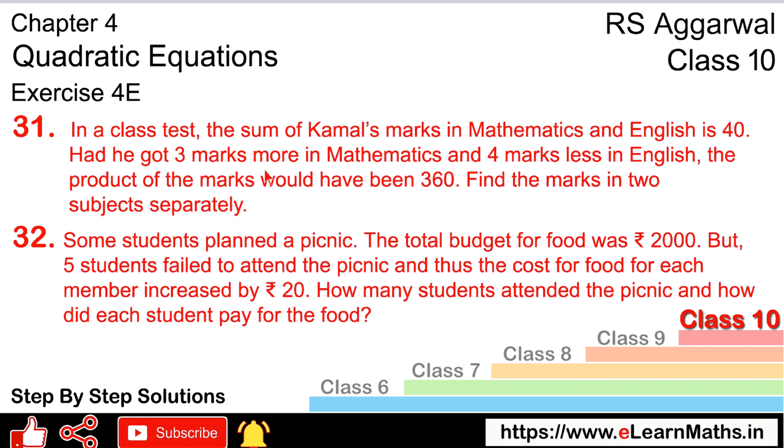Had he got 3 marks more in mathematics and 4 marks less in English, the product of the marks would have been 360. Find the marks in two subjects separately.